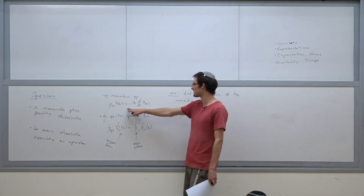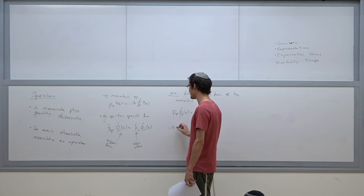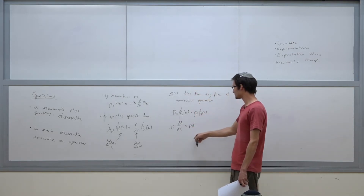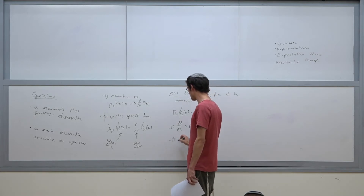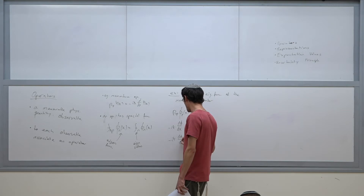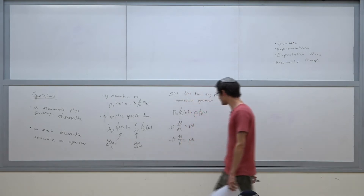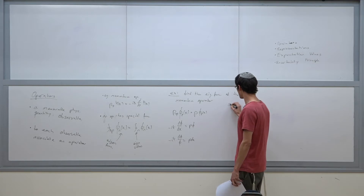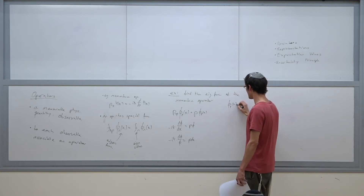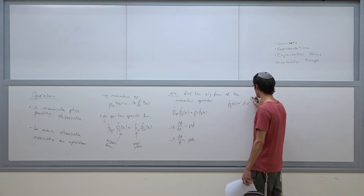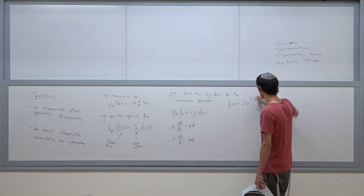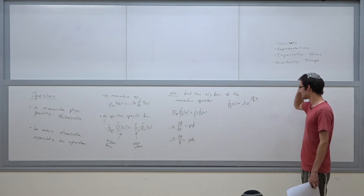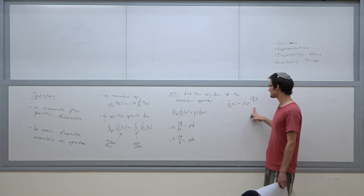To solve the equation, we plug in the operator in its explicit form: -iℏ d/dx acting on φ_p. We can separate the variables and solve the differential equation. We get dφ/(φ_p dx), which is a logarithm. We find that φ_p(x) equals some integration constant times e^(ipx/ℏ). Dividing by -iℏ gives us the exponent p/ℏ. So these are the eigenfunctions that satisfy this equation.